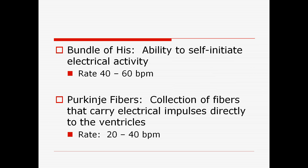Down in the Purkinje fibers, a collection of fibers sends the electrical impulse to the ventricles. That rate is 20 to 40 beats per minute. If a dysrhythmia originates in the Purkinje fibers, that's the rate it would generate. Same with the bundle of His — these intrinsic rates only apply when there's an abnormal self-initiated rhythm from those locations.